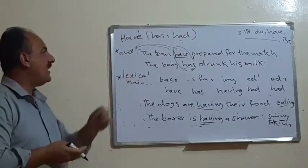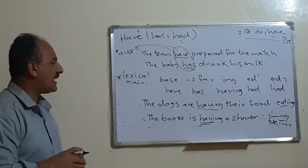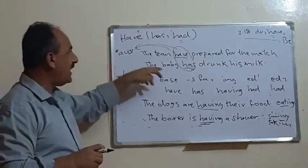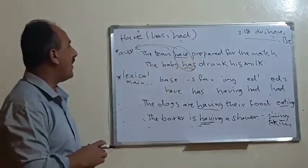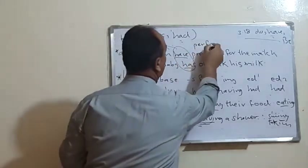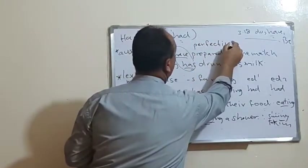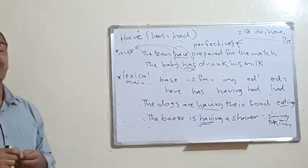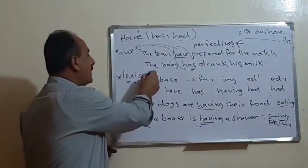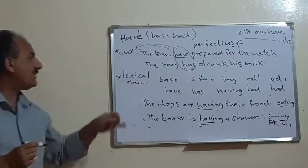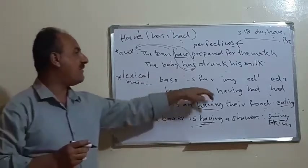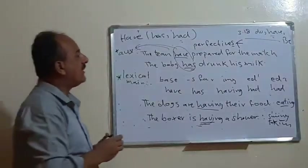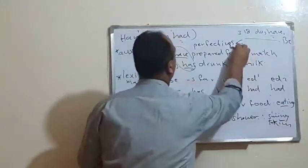To summarize: 'have' can be used as a lexical or main verb, or as an auxiliary. As an auxiliary, it is used in perfective tenses — the present perfect, past perfect, and future perfect. As a main verb, its forms are: have, has, having, had, and had. Finally, the last verb we have is the verb 'be.'